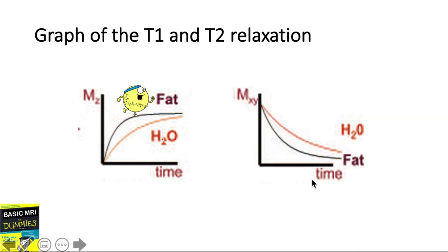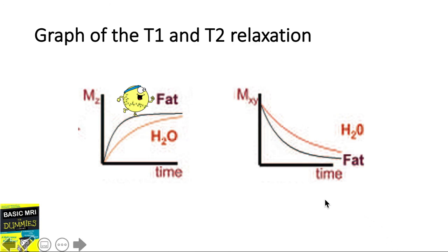Looking at the graph on the right — how fast is fat to lose its transverse magnetization compared to water? Fat is faster or quicker to lose its transverse magnetization compared to water. We know this graph is about transverse magnetization because we see magnetization plotted in the XY plane, or the transverse plane. Therefore, in this graph we see that fat has both a short T1 property and a short T2 property.